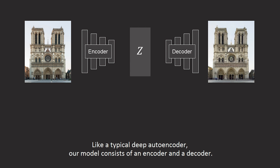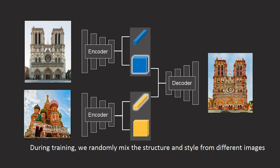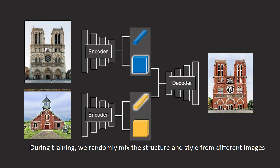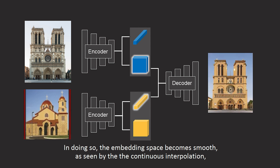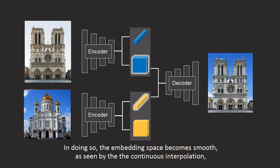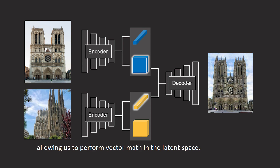Like a typical deep autoencoder, our model consists of an encoder and a decoder. The encoder outputs two codes representing style and structure. During training, we randomly mix the structure and style from different images. In doing so, the embedding space becomes smooth, as seen by the continuous interpolation, allowing us to perform vector math in the latent space.